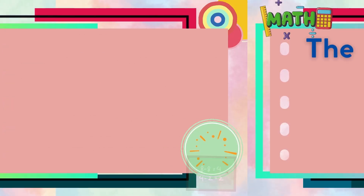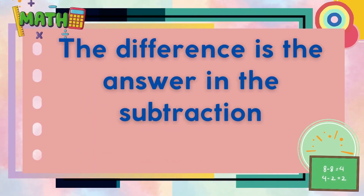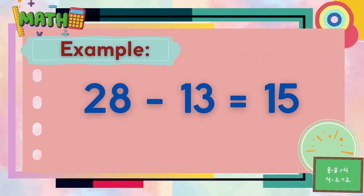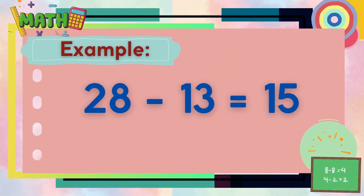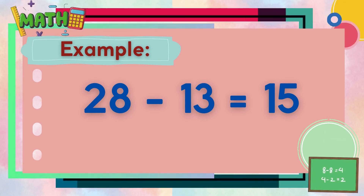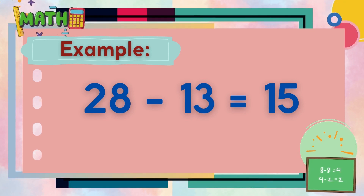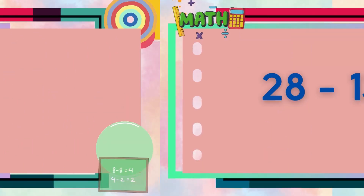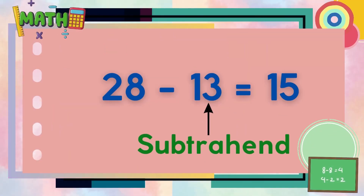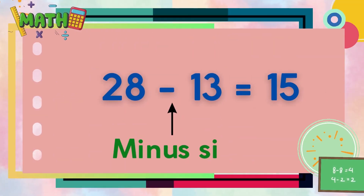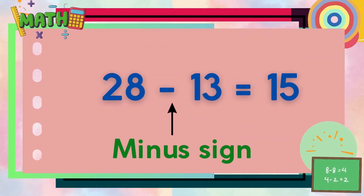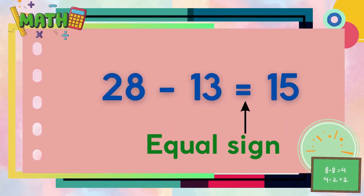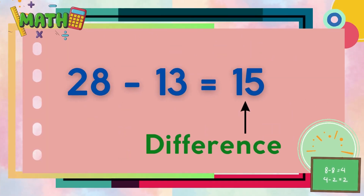The difference is the answer in the subtraction sentence. Let's have this example: 28 minus 13 equals 15. 28 is the minuend, 13 is the subtrahend, the sign between them is the minus sign, next is the equal sign, and 15 is the difference.